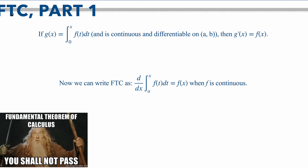The fundamental theorem of calculus part one states that if you have a function g equal to the integral or area under the curve from a to some x of some function f(t) dt, and f is continuous and differentiable, then the derivative of g is going to be equal to f. Think of it as the antiderivative: if you have some function f and take the antiderivative to get g, then taking the derivative of g gives you f back. So if we take the derivative of our integral of f(t) dt, we will get f of x.